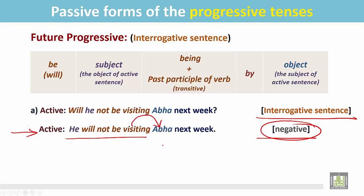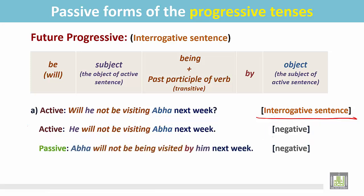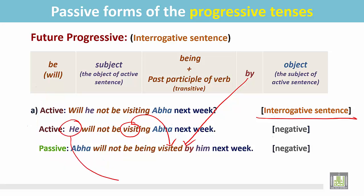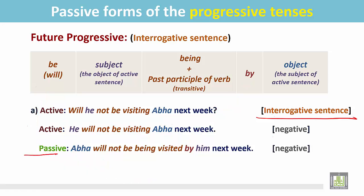In the passive sentence, the object becomes the subject: 'Abha'. Then the be verb 'will', for negative 'not' — 'will not be'. For the progressive tense, 'being'. The past participle form of 'visit' is 'visited'. Then the preposition 'by', and the subject of the active sentence becomes the object in the passive. The passive form: 'Abha will not be being visited by him next week.' The sentence remains in the negative as a statement.